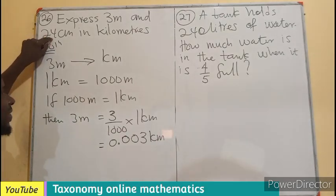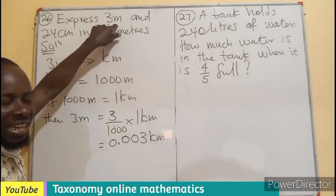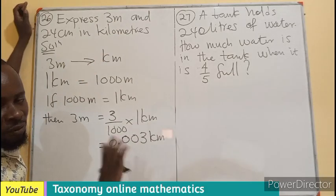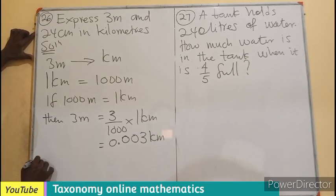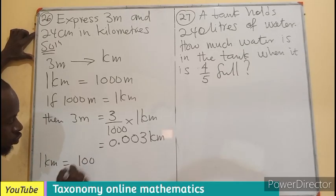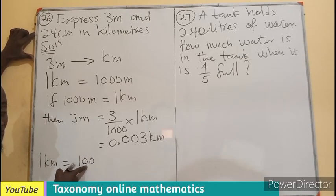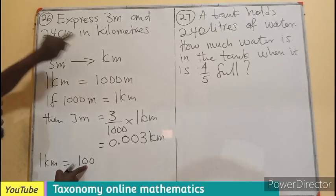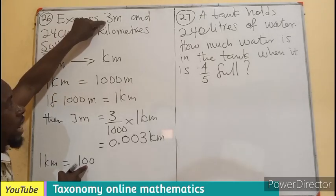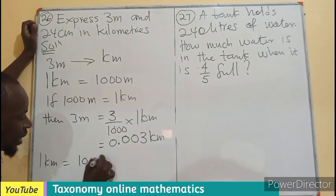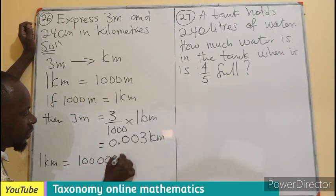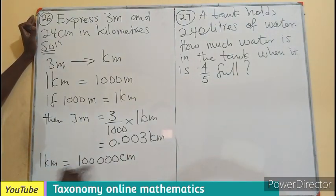We must also change the centimeters into kilometers, or we can change it into meters then change the meters into kilometers. We know that 1 kilometer equals 100,000 centimeters—that's 100 times 1000.